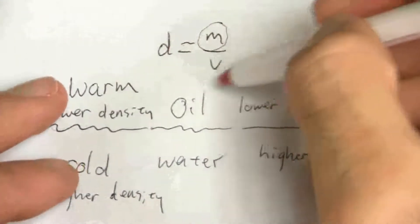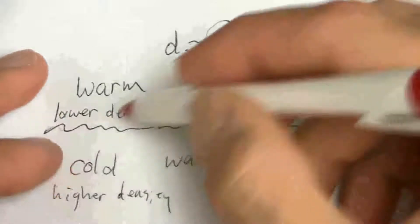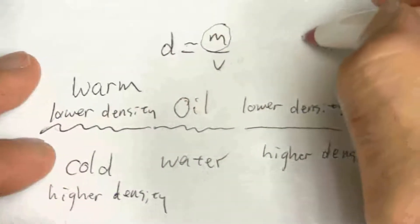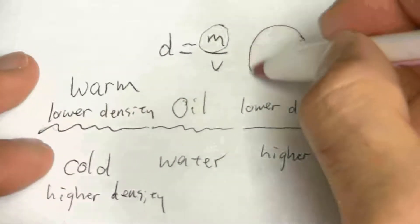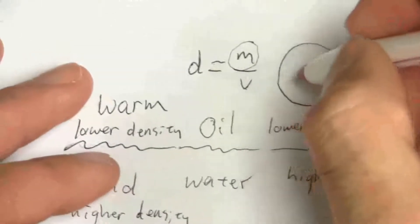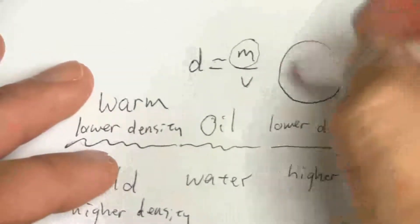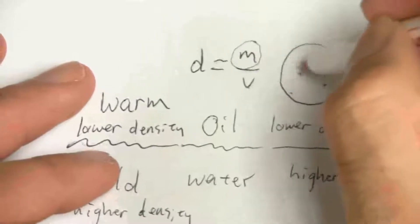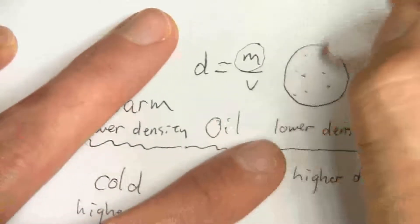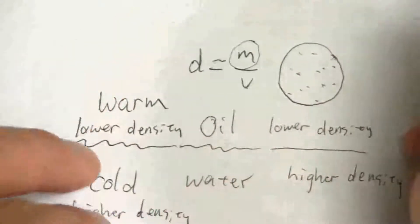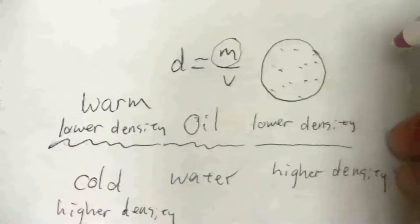Mass divided by a smaller volume. In other words, the warm air, I'm taking the same amount of gas. So let's just say this circle enclosed in this circle are a certain number of gas particles.